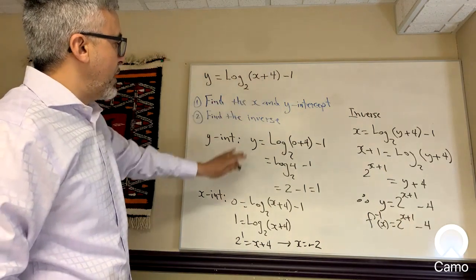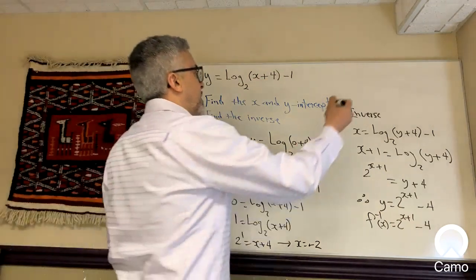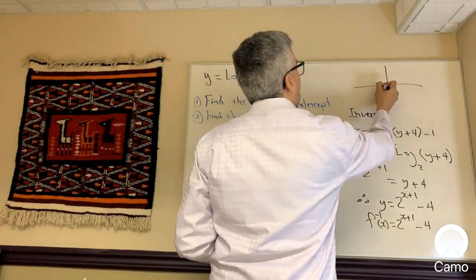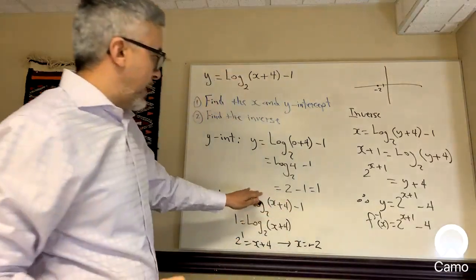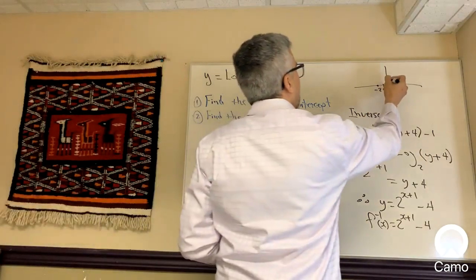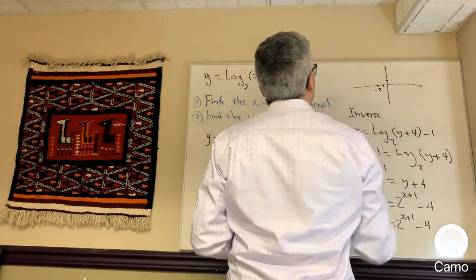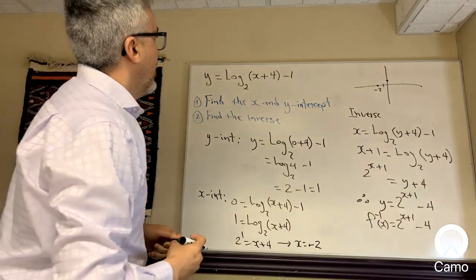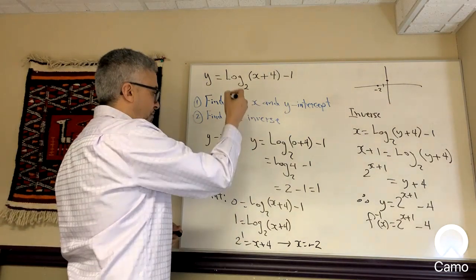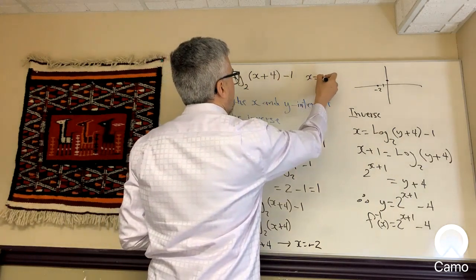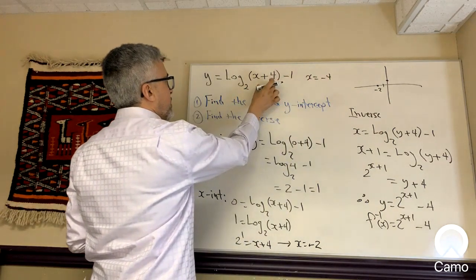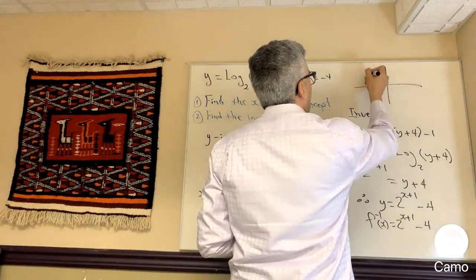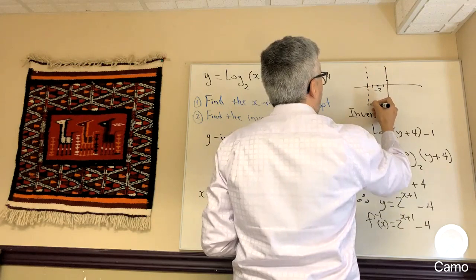What's useful about this is that if you know the x-intercept and the y-intercept and need to graph it, your x-intercept is at negative 2 and the y-intercept is at 1. Also, log functions have vertical asymptotes — the asymptote for this function is at x equals negative 4, which is whatever value makes the argument zero. The asymptote shifted here, and so the log function looks like this.